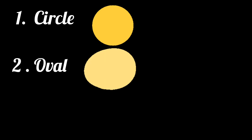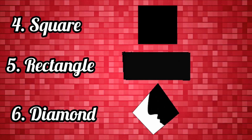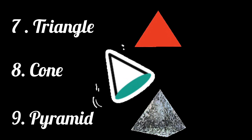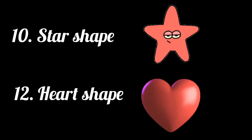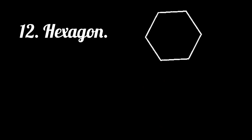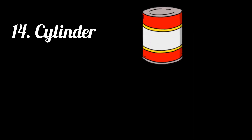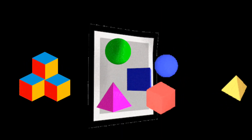Now it's time to revise. Circle, oval, semicircle. Square, rectangle, diamond. Triangle, cone, pyramid. Star, heart. Hexagon and octagon. Cylinder and cube. So that's all for today. Hope you liked the video. Thank you for watching. Bye bye!